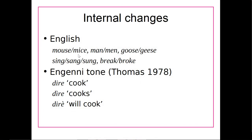Here are some examples from English: the word 'mouse' takes the plural allomorph 'mice' — it doesn't add a sound, it just changes the internal vowel from 'ow' to 'ee.' Similarly, 'man' changes to 'men,' 'goose' changes to 'geese,' 'sing' becomes 'sang' and 'sung,' and 'break' becomes 'broke.' The language Genny also does this, except with tone instead of vowel quality — one tone means 'cook,' another tone means 'cooks,' and another means 'will cook,' showing tense through tone changes on the vowel.